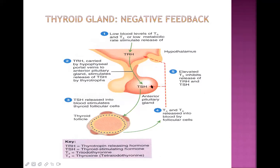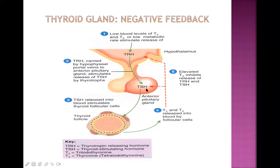Now for the pathological application: if the thyroid gland secretes large amounts of T4 and T3, that is hyperthyroidism or thyrotoxicosis. Those hormones at excessive levels give more negative feedback, so TRH and TSH will be very decreased. Opposite to that, if the thyroid gland secretes very little T3 and T4, it cannot properly inhibit TRH and TSH, so more TRH and TSH will come - this is the negative feedback mechanism.